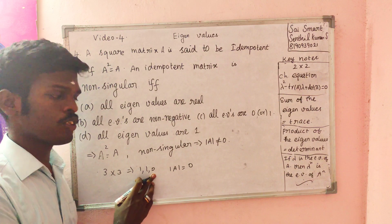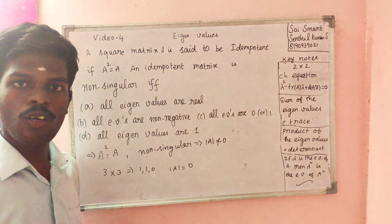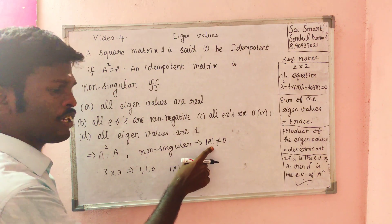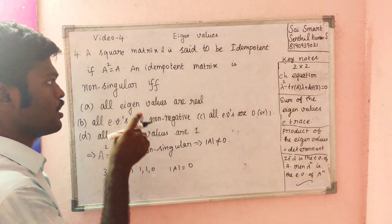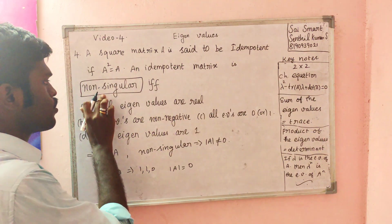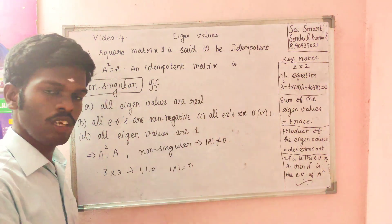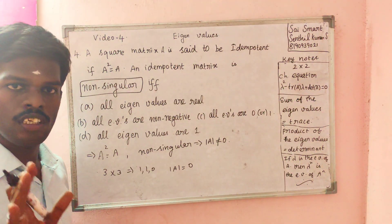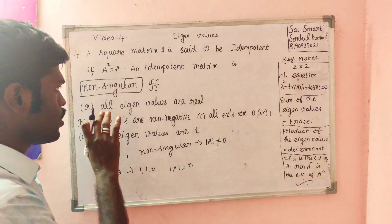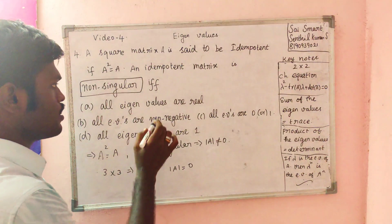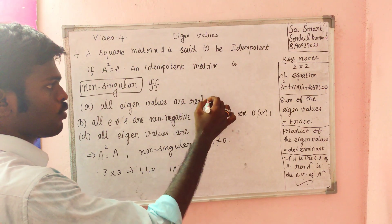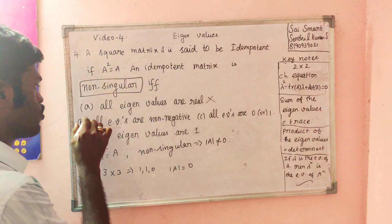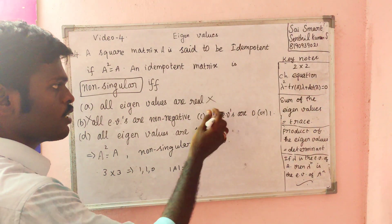If at least one eigenvalue is zero, I remember that automatically the determinant is zero. If I say an eigenvalue is zero, then the determinant is zero. Determinant zero means the matrix is singular, not non-singular. Non-negative means zero is included, so zero is included — automatically the path includes zero.